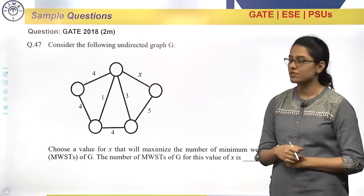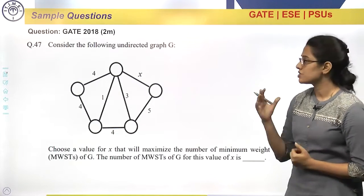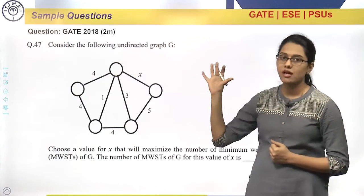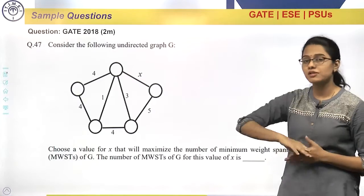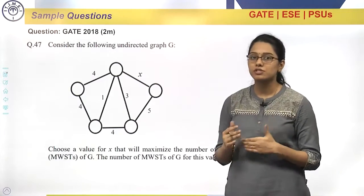So, this is a GATE 2018 question, again a 2 mark question. Now, you see, we have seen so far so many examples, all the examples are different. The concept is same - that is minimum cost spanning tree - but the way they have asked the question is different.